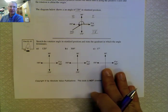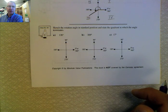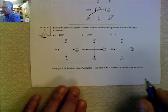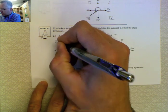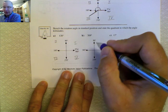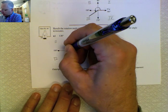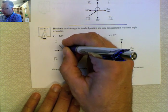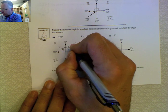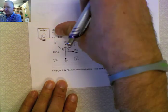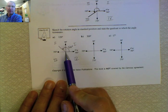Let's practice sketching a couple of angles. For a 120-degree angle, we first figure out which quadrant it's in. Since 120 is between 90 and 180, it goes in quadrant two. Because it's a positive rotation, we draw it in counterclockwise. It's important to label the angle with its degree measure — without that label, there would be no way to know the angle from the drawing alone.